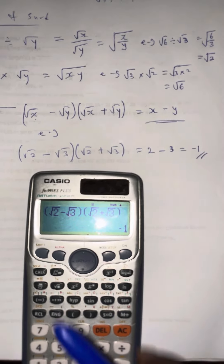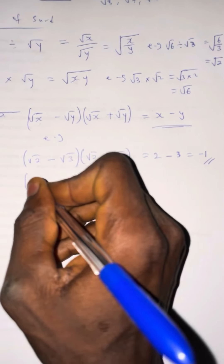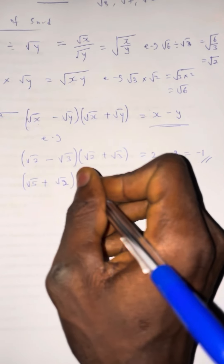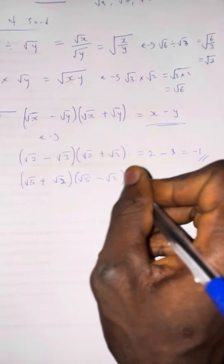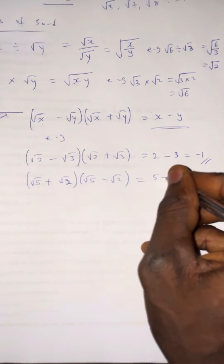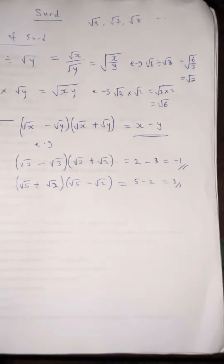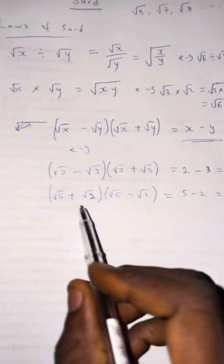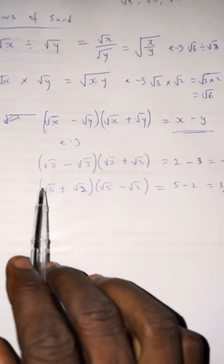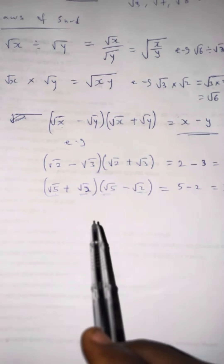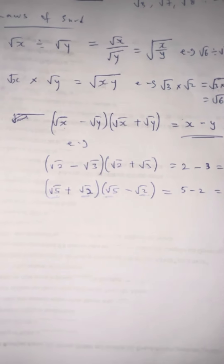The same principle applies if you have (root 5 plus root 2) multiplied by (root 5 minus root 2). Your answer will be the first number, 5, minus the second number, 2, giving 3. This works because the same numbers appear in both brackets — the only difference is the sign.